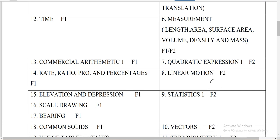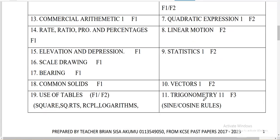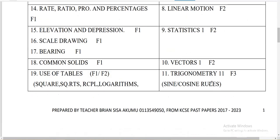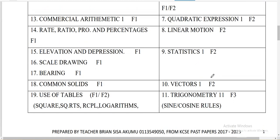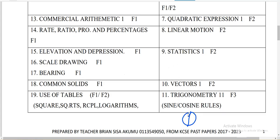Linear motion is very common. Statistics 1 was there last year and it can be there this year too. Then trigonometry 2, which is Form 3 work involving the cosine rule and the sine rule. You are given a triangle, sometimes two triangles combined together — you need to find angles using the cosine rule and the sine rule, and you can be asked to find the area. You may be given a circle with a triangle drawn inside and a shaded region, and asked to find its area using the cosine and sine rule.